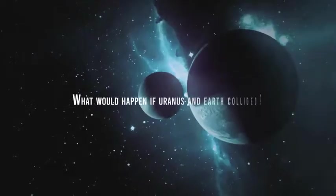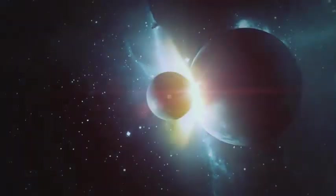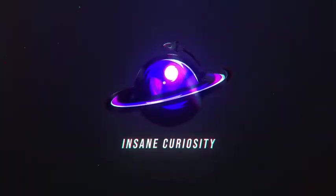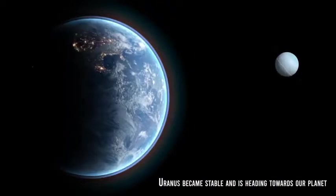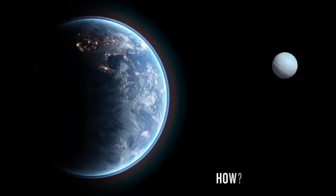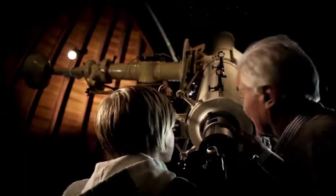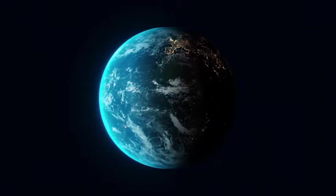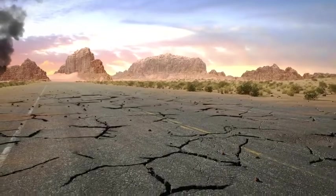What would happen if Uranus and Earth collided? Uranus became unstable and is heading towards our planet. How? Scientists believe it was a massive collision with another planet. This epic collision changed Uranus's orbit, and now it's heading straight for Earth. If Uranus collides with the Earth, the impact will be devastating.